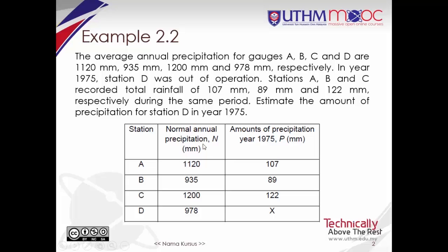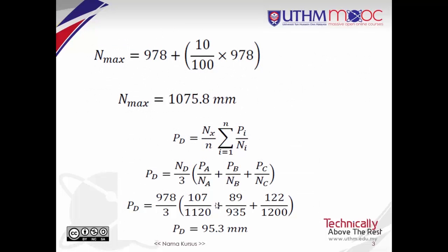Since the average annual precipitation amounts for the gauges A and C exceeded 1,075.8mm, normal ratio method is used. The amount of precipitation for station D in year 1975 is 95.3mm.